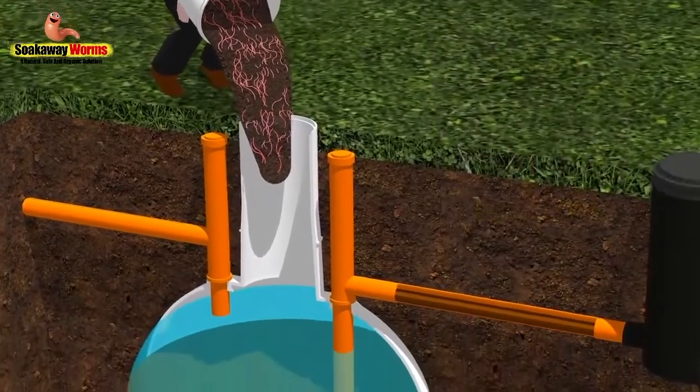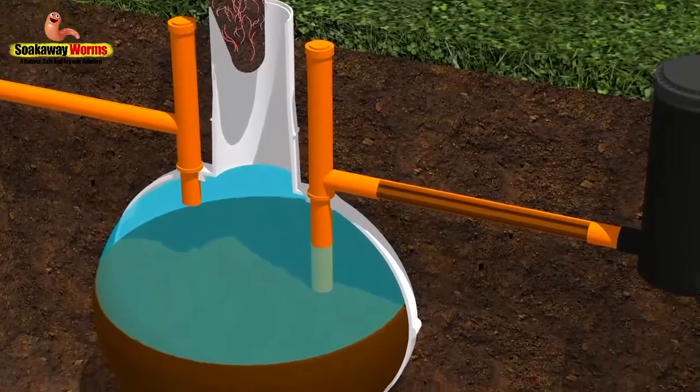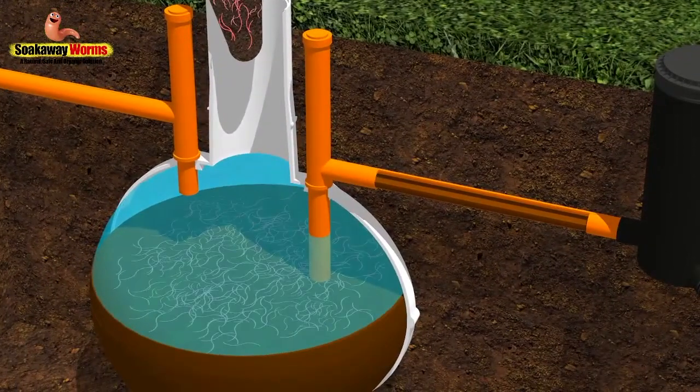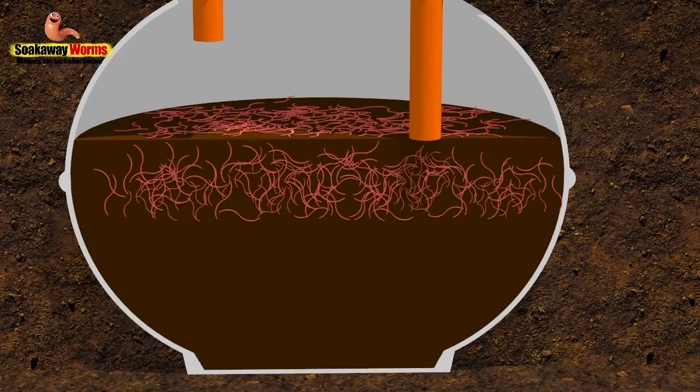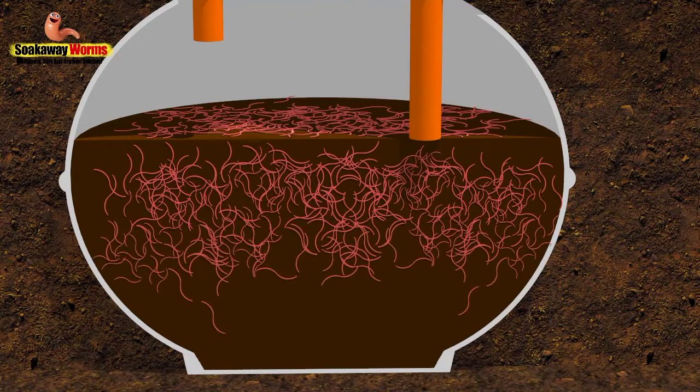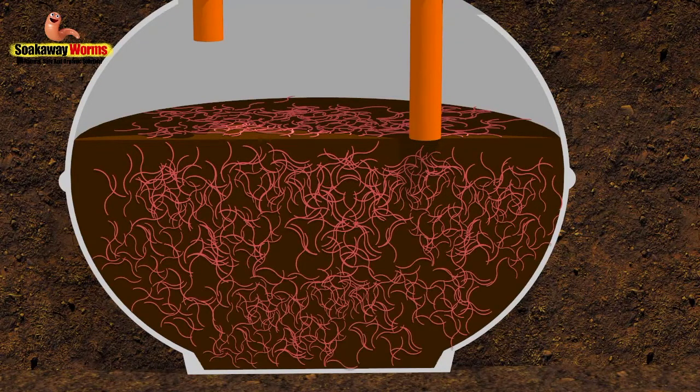Simply take the lid off the bucket and tip the entire contents into the septic tank. The worms will then sink to the bottom of the tank, landing on top of the sludge. And very quickly, these worms will adjust to their new surroundings and will start burrowing and working their way into the fat and the grease and the sludge.